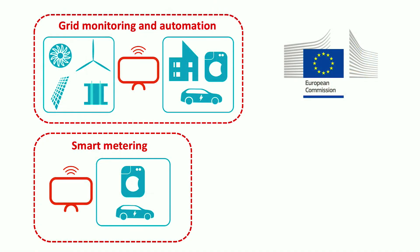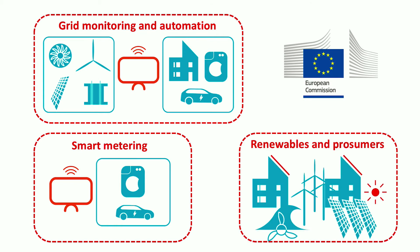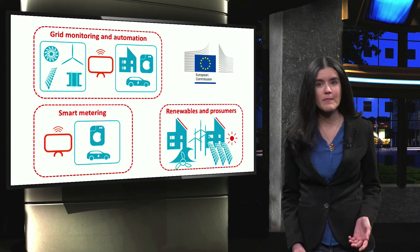Smart grids can also help to better integrate renewable energy. The sun doesn't shine all the time, and the wind doesn't always flow. So, combining information on energy demand with weather forecasts can allow grid operators to better plan the integration of renewable energy into the grid and keep the power balance. Smart grids also provide the opportunity for consumers who produce their own energy to respond to prices and sell excess power to the grid.